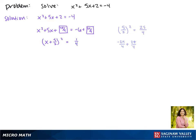This means that x plus 5 halves equals plus or minus the square root of 1 fourth. The square root of 1 fourth is 1 half, so this gives us x plus 5 halves equals plus or minus 1 half.